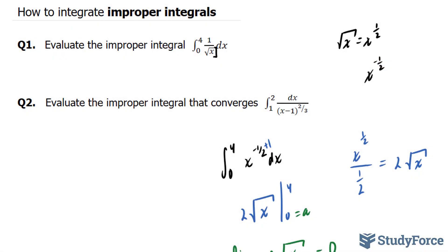Let's move on to question two: evaluate the improper integral that converges for the function dx over bracket x minus one to the power of two over three, between one and two. If I evaluate the denominator when x is equal to one, I end up with zero in the denominator, which will give me an error.